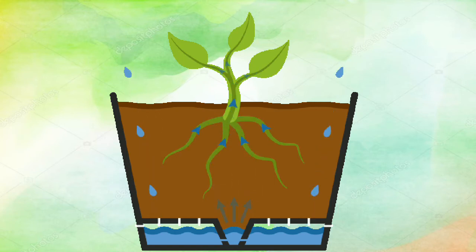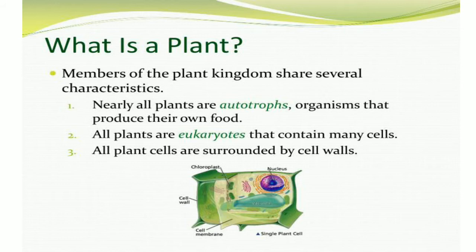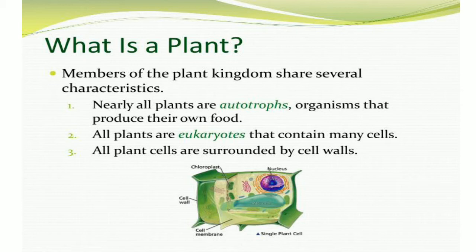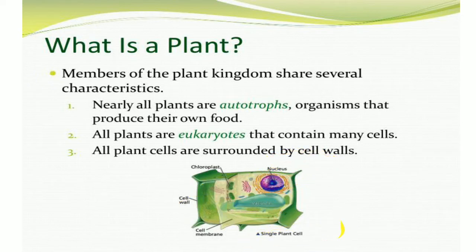Now we are going to learn the next slide — what is a plant? Members of the plant kingdom share several characteristics. Nearly all plants are autotrophs, organisms that produce their own food. All plants are multicellular, containing many cells, and all plants' cells are surrounded by cell walls. Here we can see a cell membrane, cell wall, nucleus, and a single plant cell.